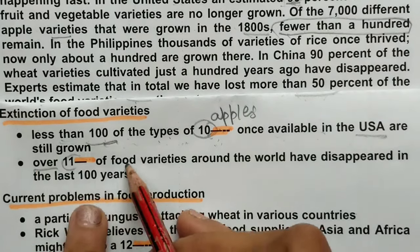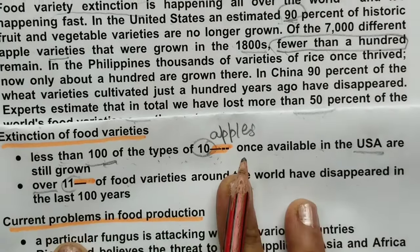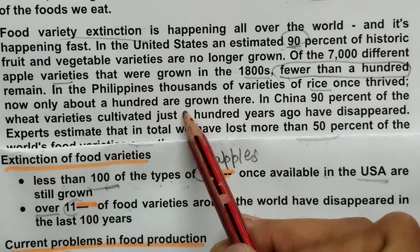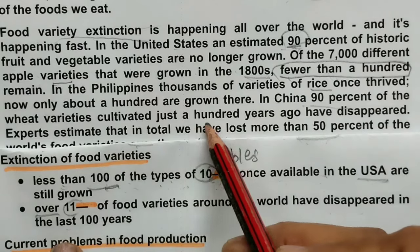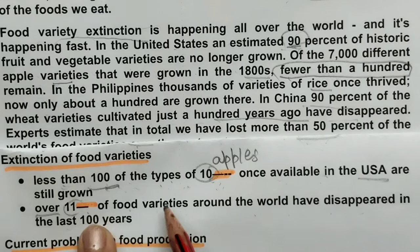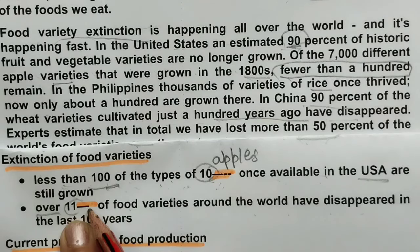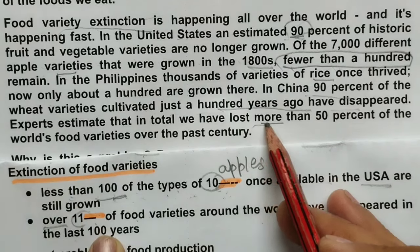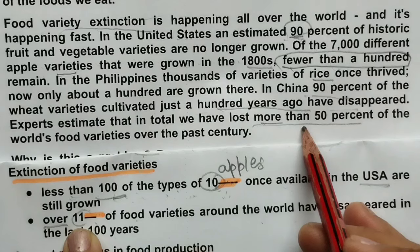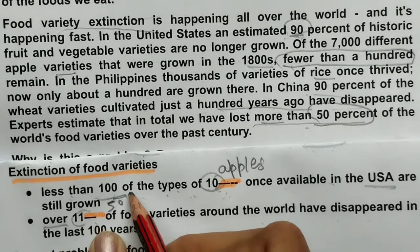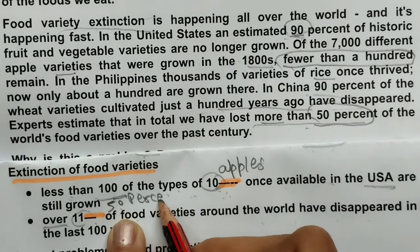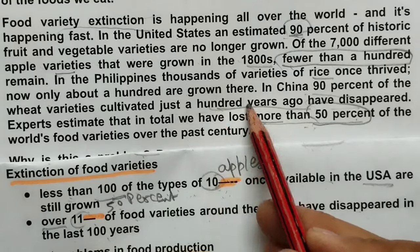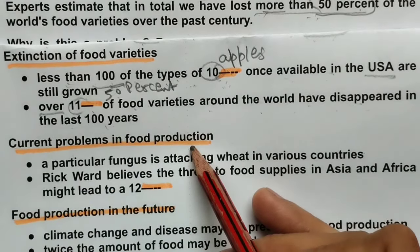Question eleven: 'Over blank of food varieties around the world have disappeared in the last 100 years.' In the Philippines, thousands of rice varieties once thrived but only about 100 are grown there now. In China, 90 percent of wheat varieties cultivated 100 years ago have disappeared. So over 50 percent of the world's food varieties have disappeared in the last 100 years. The answer is 50 percent.